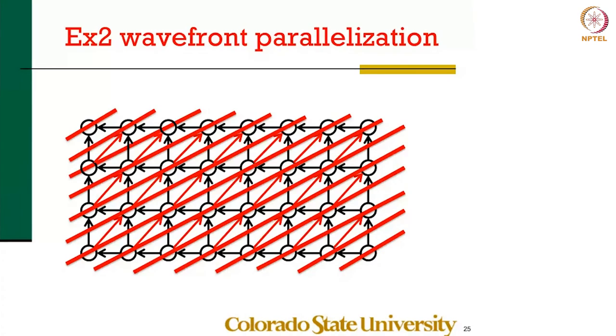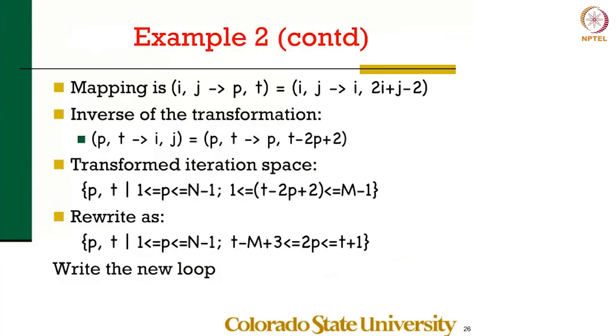I gave you some intuitive ideas on how to find such a schedule. But of course, like I said, there is a huge body of work that describes how to find a schedule. Now what do we do? What is this mapping? So the time step is 2 times i plus j.